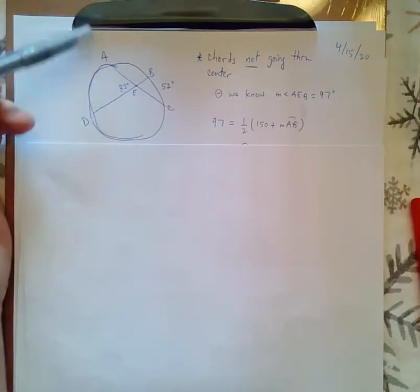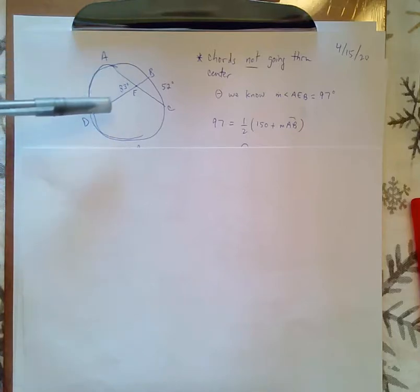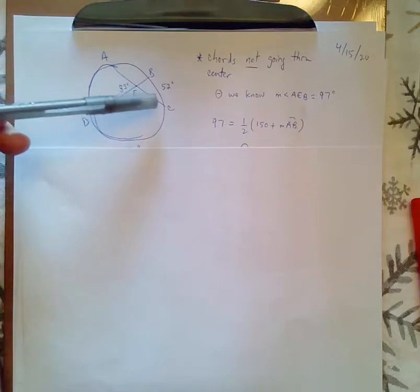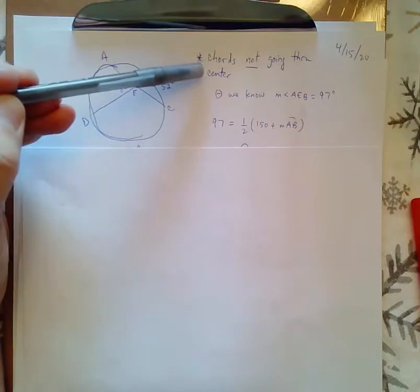I just put a problem together. Obviously, the circle they drew isn't that great. But the key here is that the chords inside the circle do not go through the center.